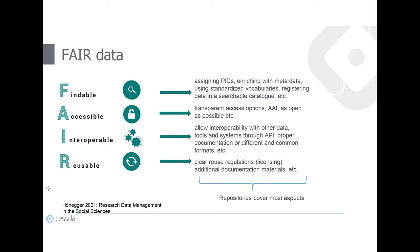Research data should be accessible — the access options under which data can be accessed should be outlined clearly and transparently. Ideally, there's an authentication and authorization infrastructure so you don't need to create one account per repository but can log in with your institutional account. Research data should overall be as open as possible, but as closed as necessary.